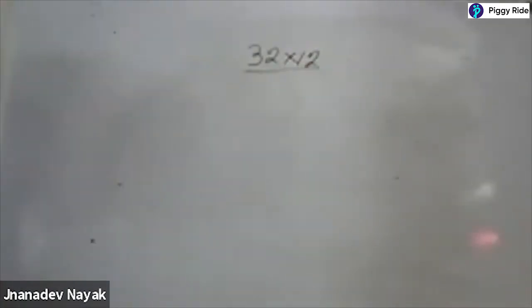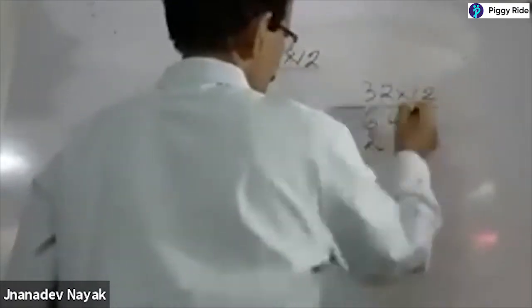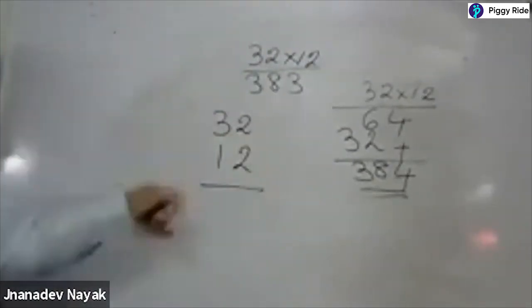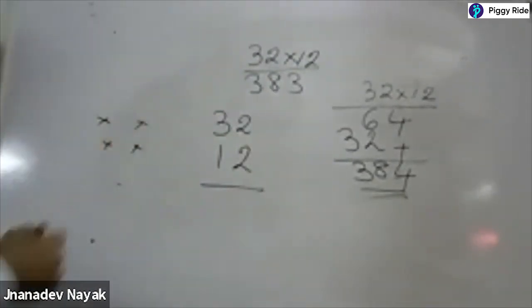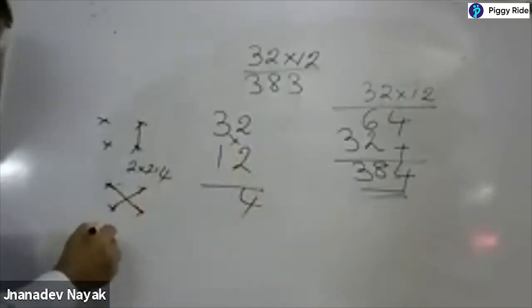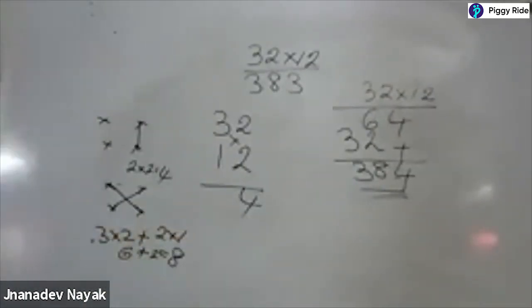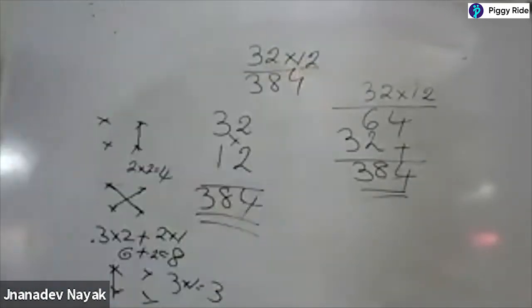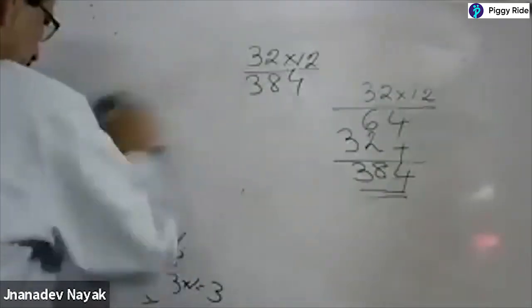What is called the criss-cross method of multiplication is called the Urdhva Tiryak Sutra. Any multiplication of any number, you can do with the help of this. In normal math for 32 into 12: 2 twos are 4, 2 threes are 6, 1 two is 2, 1 three is 3 — and adding gives you 384. That is normal math. But I will show you how to do it in Vedic Math.